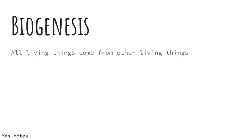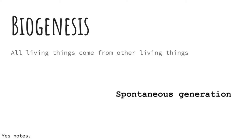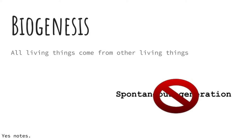All living things come from other living things. That seems fairly reasonable right now, right? But before the 17th century, people believed in spontaneous generation, meaning that living things spontaneously occur from non-living things. That explained why maggots appeared in old meat, and fish just spontaneously occurred in ponds. However, scientists performed many experiments and found that living things do not occur spontaneously, but always come from another living thing.